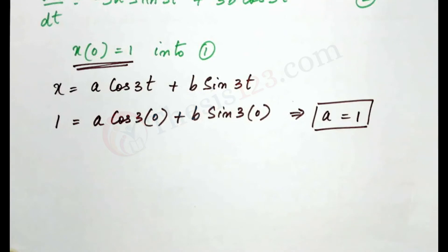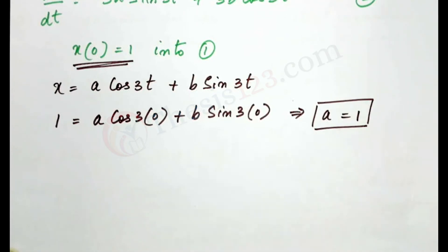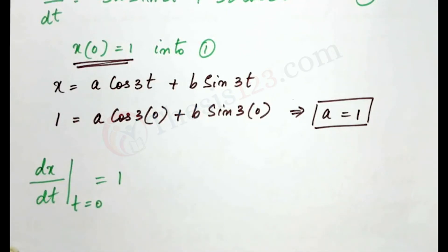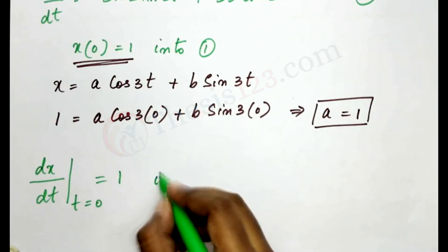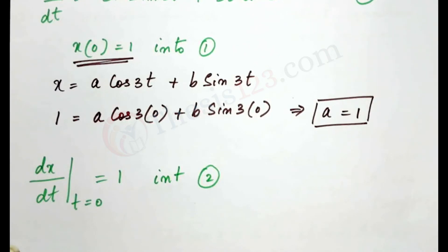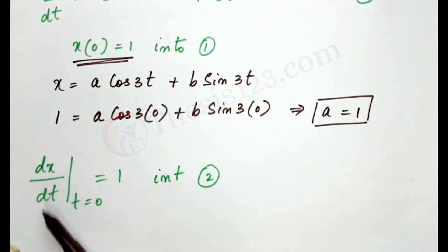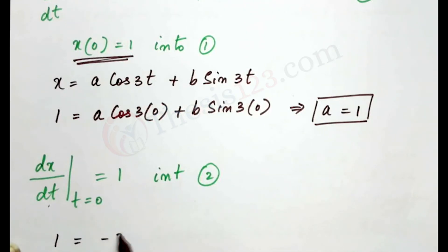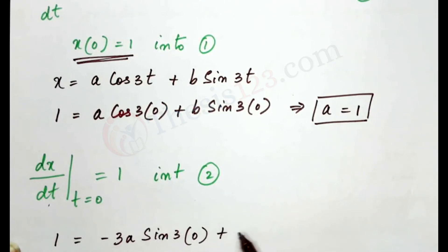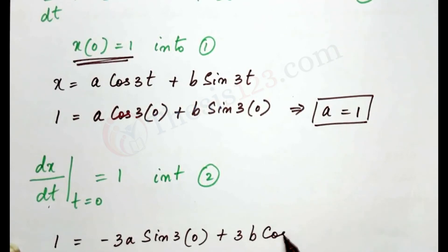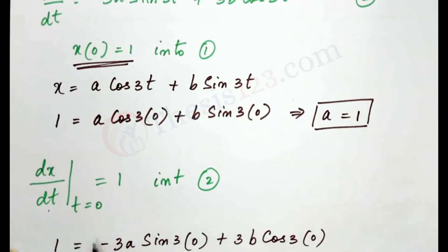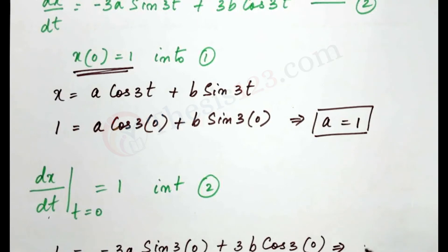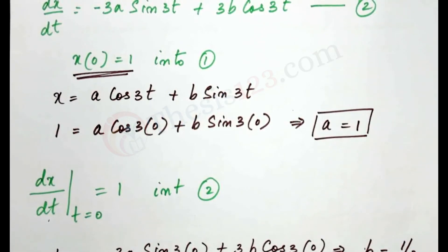The next condition is dx/dt at t = 0 equals 1. Substituting into equation 2: 1 = -3a·sin(3×0) + 3b·cos(3×0). The sine term becomes 0, and cos(0) = 1, so we are left with 3b = 1. This implies the value of b is 1/3.